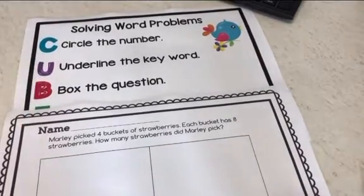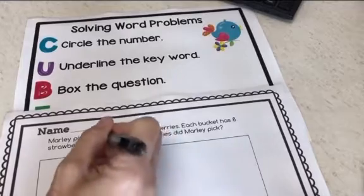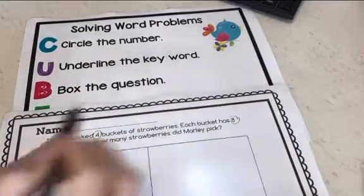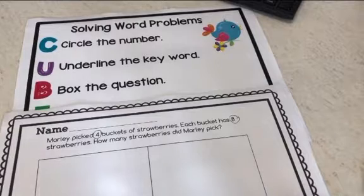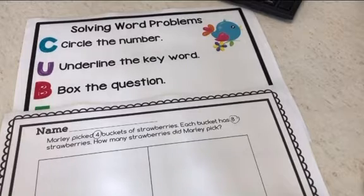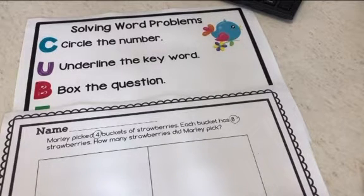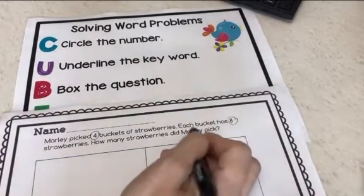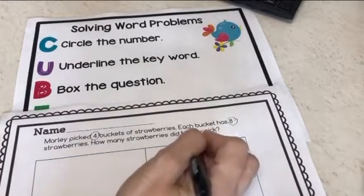I will circle the numbers and we'll start there. Then we'll underline a keyword. I have a bulletin board with math keywords in English and Spanish, so they will start using that bulletin board as a reference. Pretty soon they will know that the word 'each' when they see it is for multiplication.